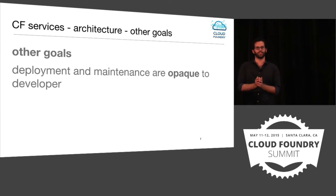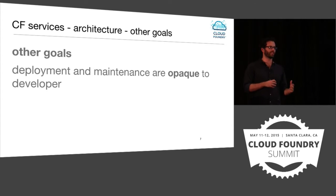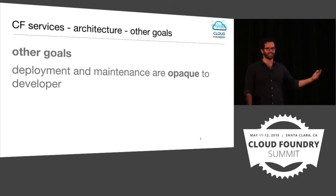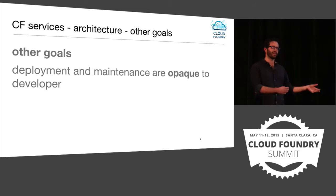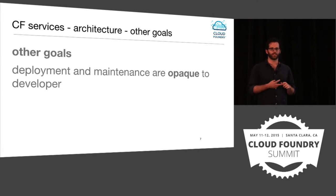We have a couple other goals to accomplish as we build out the architecture. One is that deployment and maintenance are opaque to the developer. A service developer really shouldn't be concerned with management or maintenance of a service instance — things like uptime, where servers are located, networking. We also want to be agnostic to specific technology choices and infrastructure. We don't care if a service is deployed to AWS, OpenStack, VMware, or what language it was written in.